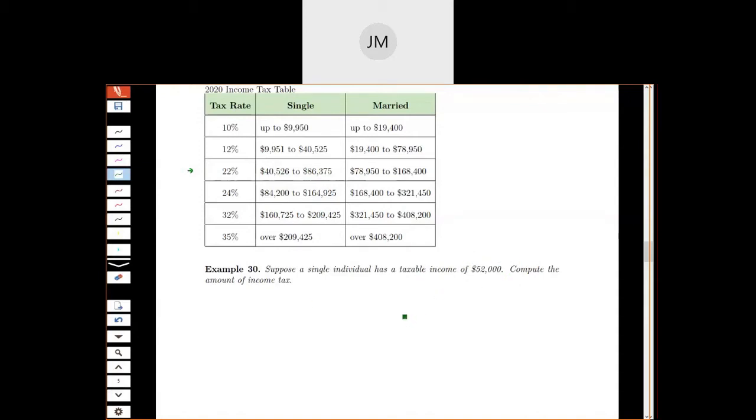We have our 10% bucket, we have our 12% bucket, and then we have our 22% bucket. And we didn't make enough to go higher, so we don't need to label all the other buckets. Those are going to be empty.